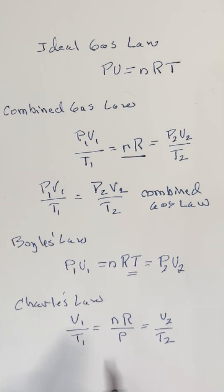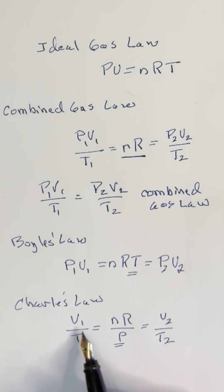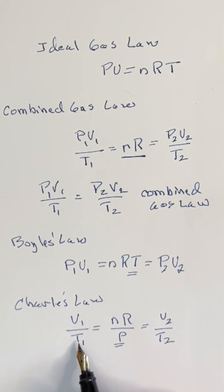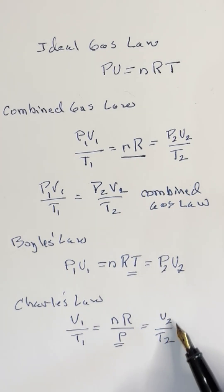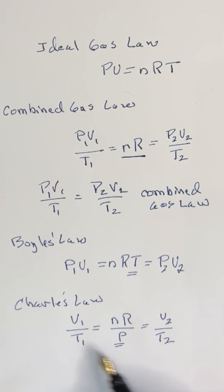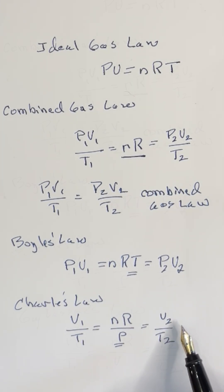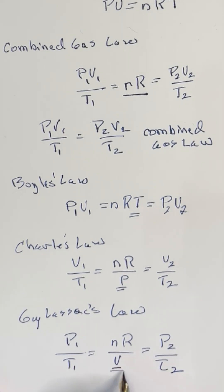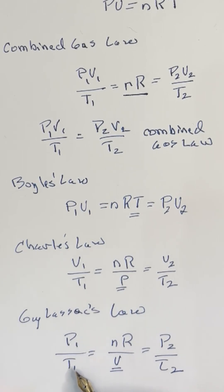Likewise, with Charles' law, we can hold the pressure stable and simply change the volume and temperature. So if we have a certain amount of gas at a certain pressure, and it's at one volume at one temperature, if we change either the volume or the temperature, we can calculate what the other value will be — for example, if we take a volume of gas at a certain temperature and increase the temperature, what's the resulting volume? Likewise, we can hold the volume stable and look at the relationship between pressure and temperature at two different states of the same gas — for example, we can have gas at a certain pressure and temperature, increase the pressure, and see what the resulting temperature is.